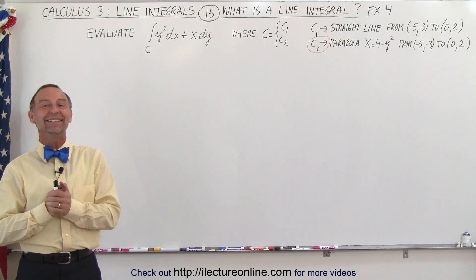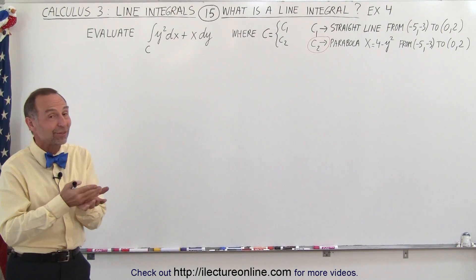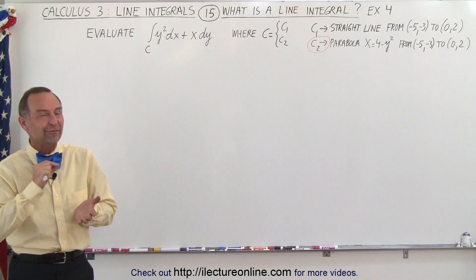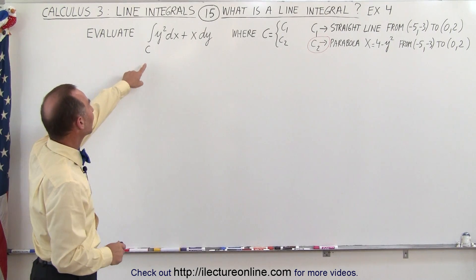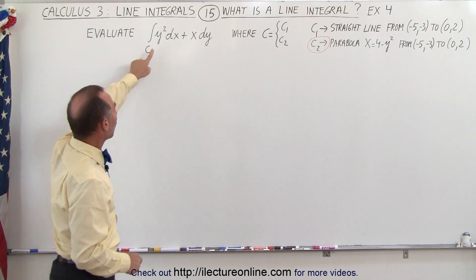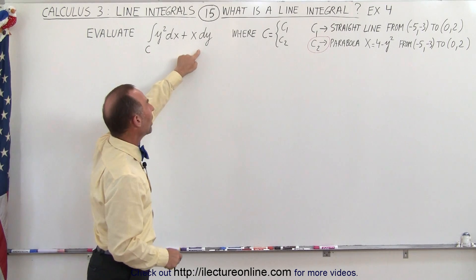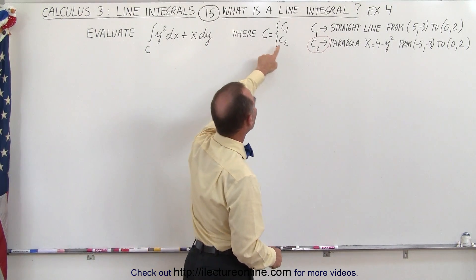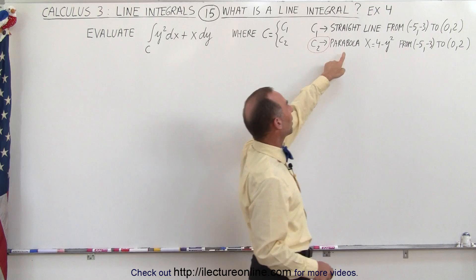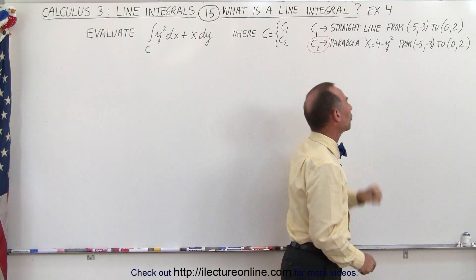Welcome to iLectureonline. In this example we're doing the same problem but with a different curve. Again we have the line integral y squared dx plus x dy, but in this case the curve is c2, which is a parabola defined by x equals 4 minus y squared.